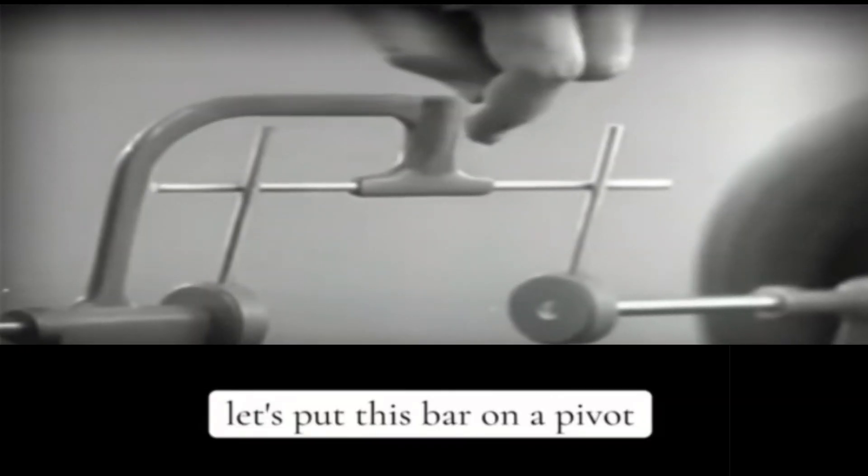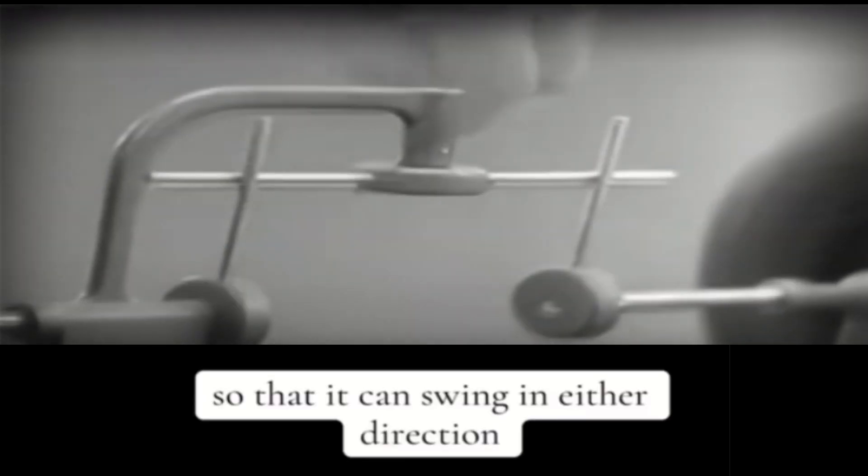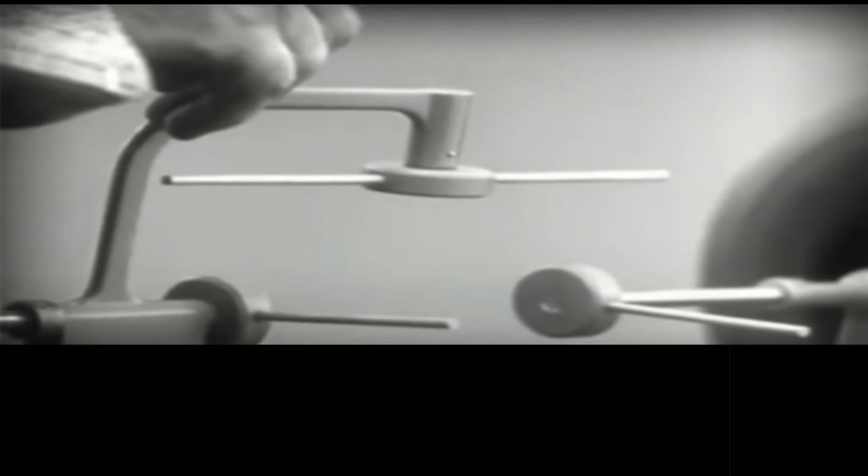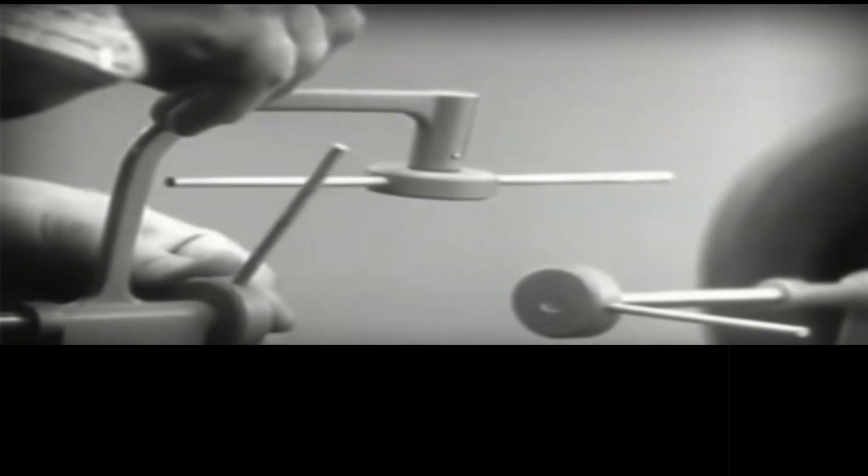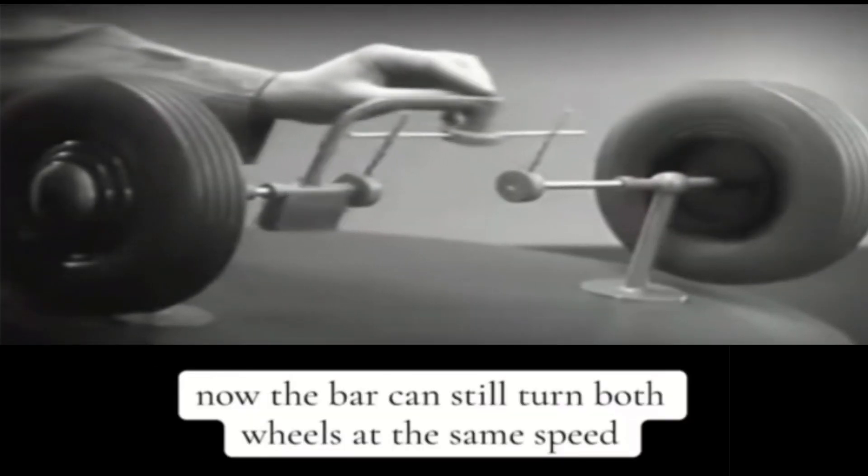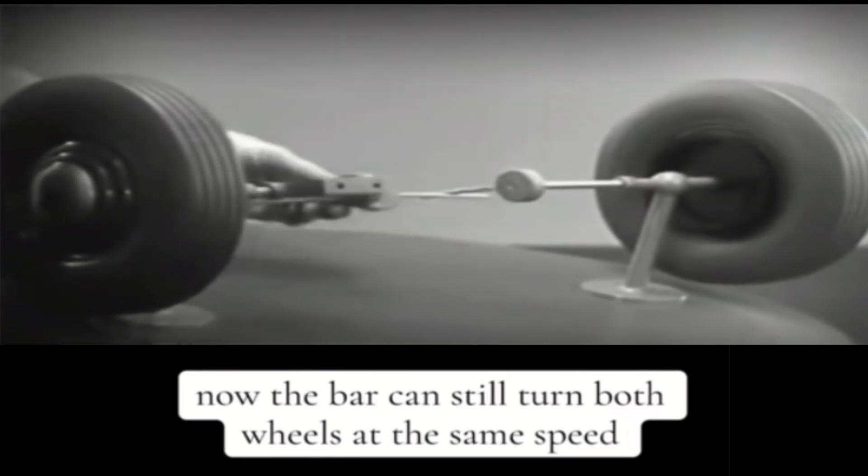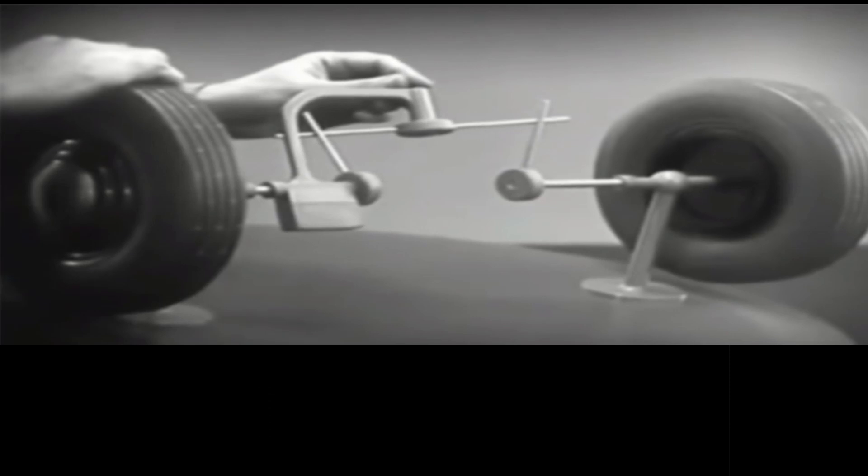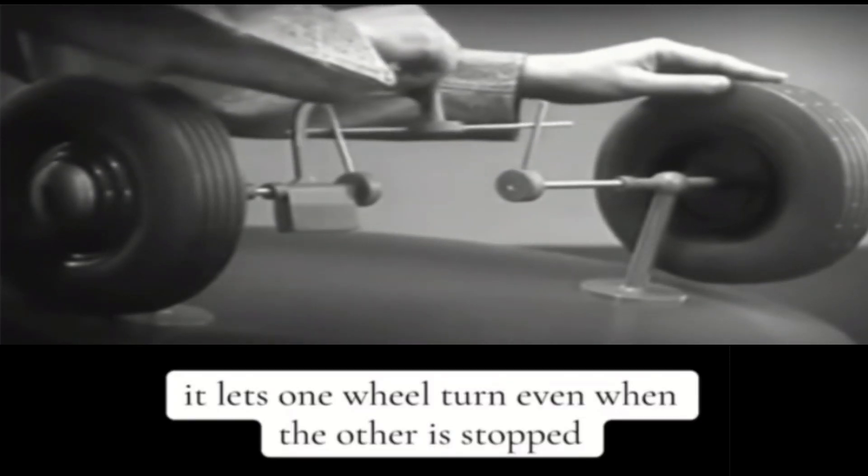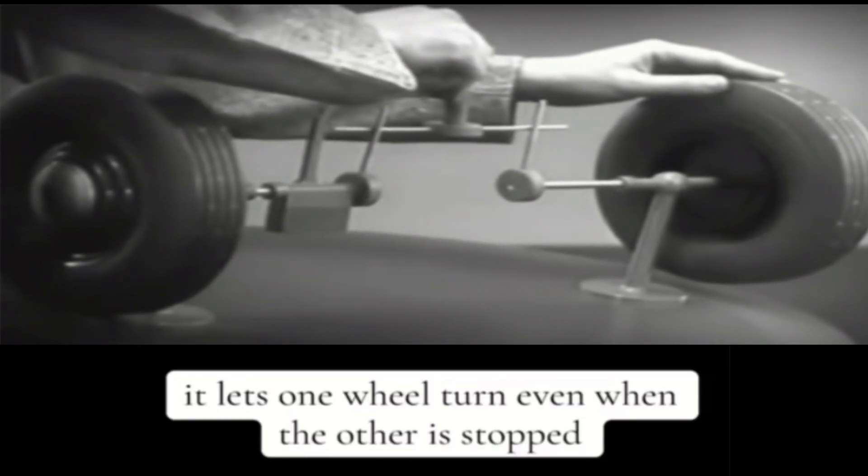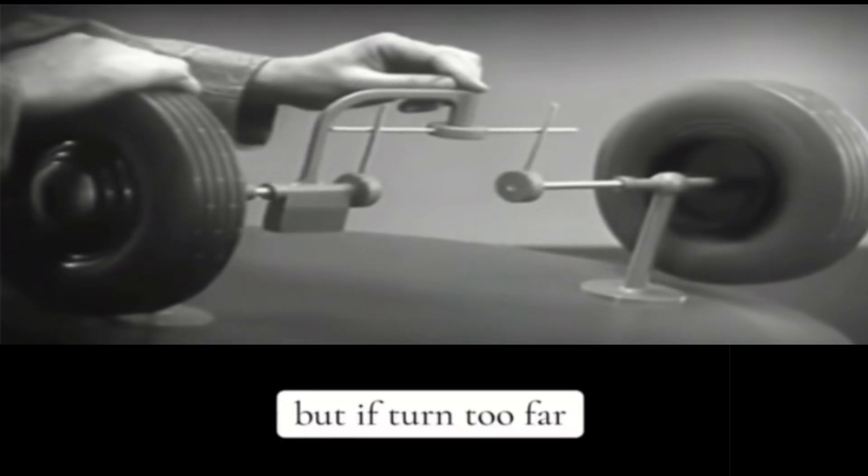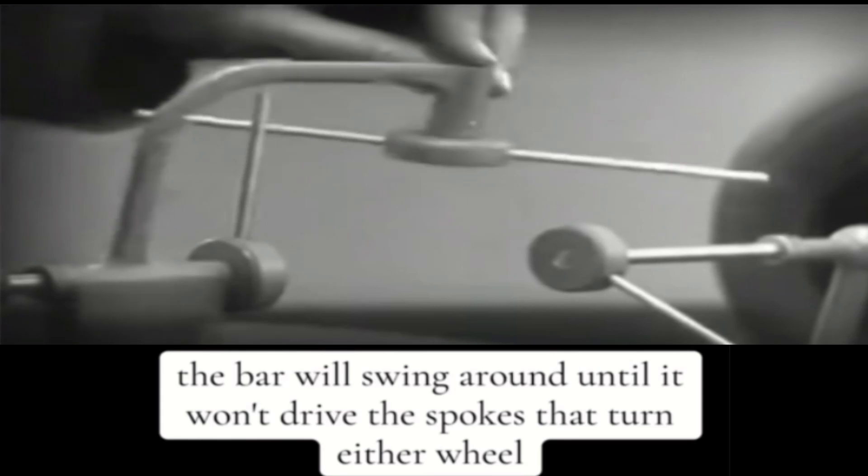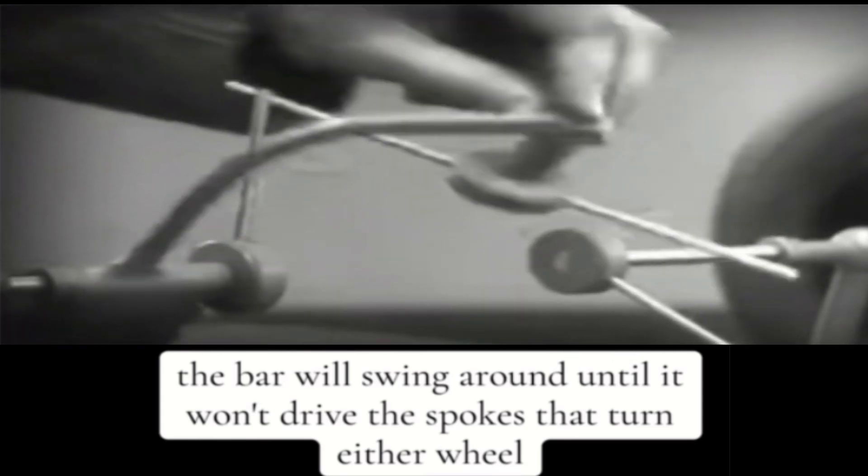Let's put this bar on a pivot so that it can swing in either direction. Now, the bar can still turn both wheels at the same speed. And because it pivots, it lets one wheel turn even when the other is stopped. But if turned too far, the bar will swing around until it won't drive the spokes that turn either wheel.